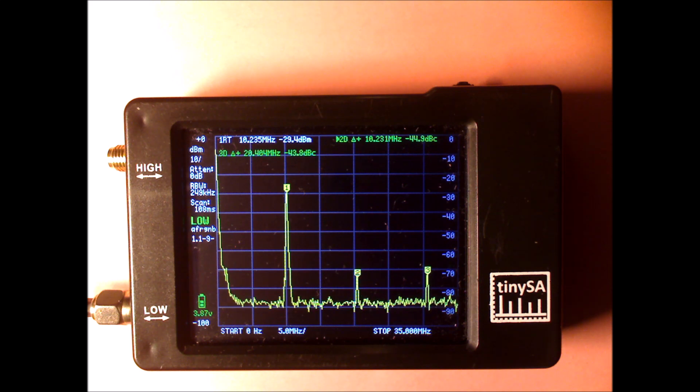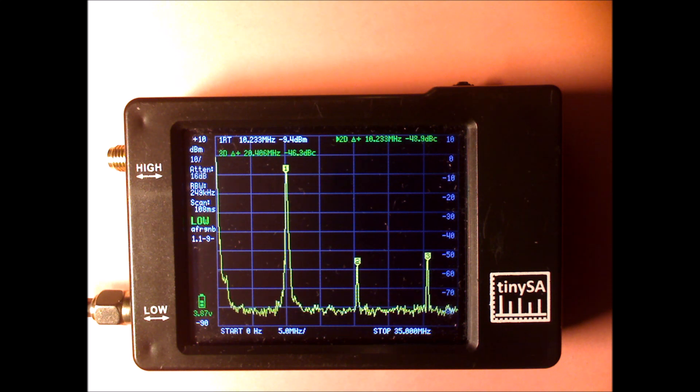This is minus 40 dBm and you see already the harmonics appearing. Minus 30 dBm, minus 20 dBm. The attenuator starts to come in because it wants to keep the input signal at the mixer at minus 25 dBm. So, let's take two more steps.